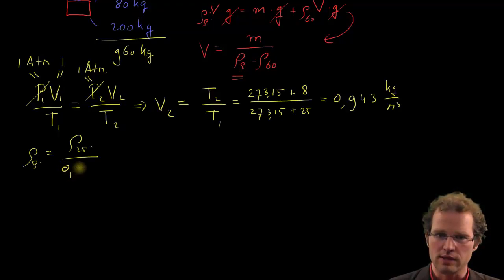And that would be, in this case, 0.943, which results in a density at 8 degrees centigrade of 1.254 kilograms per cubic meter. The same we can do for the density at 60 degrees.